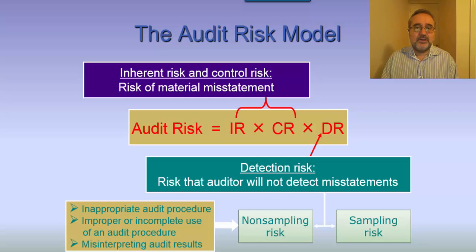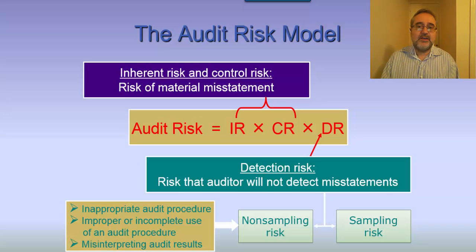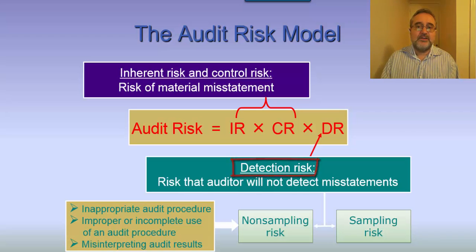Inherent risk times control risk represents the risk of material misstatement. Based upon this risk of material misstatement, the auditor will develop the nature, timing, and extent of the substantive procedures — which falls under the category of detection risk. If the risk of material misstatement is high, then the auditor will develop testing that essentially mitigates this high risk.